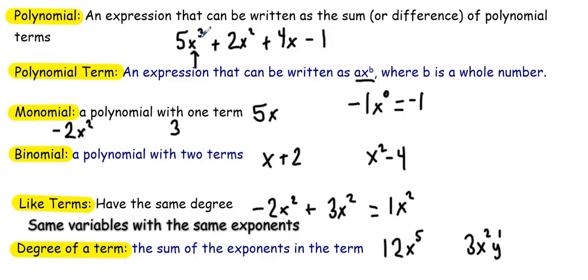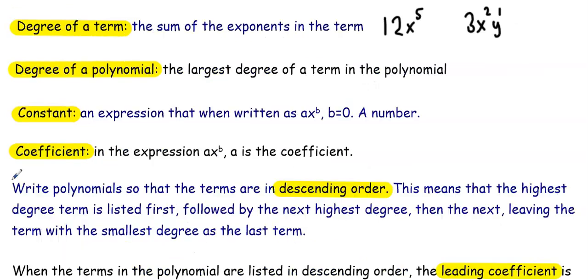3 is the largest degree, so this polynomial has a degree equal to 3. A constant is an expression that can be written as ax^b where b equals 0, in other words, a number. So 10 is a constant. Negative 5 is a constant. The square root of 2 is a constant.